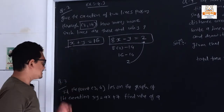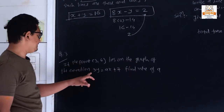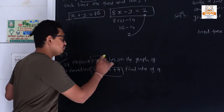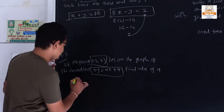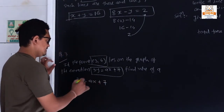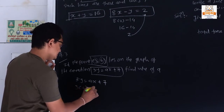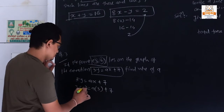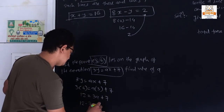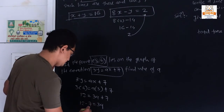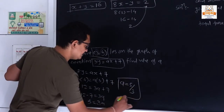Question 3: The point (3, 4) lies on the graph of the equation 3y = ax + 7. Substituting x = 3 and y = 4: 3×4 = 12, so 12 = 3a + 7, giving 12 − 7 = 3a, so 5 = 3a, therefore a = 5/3.